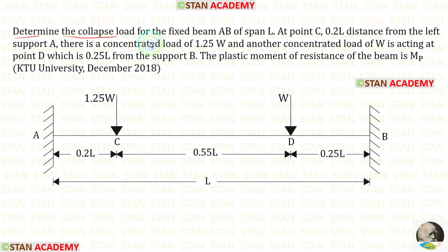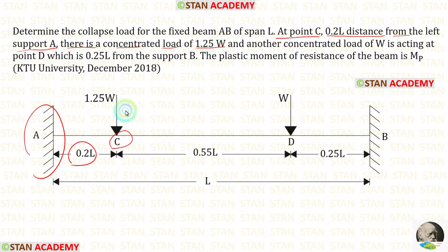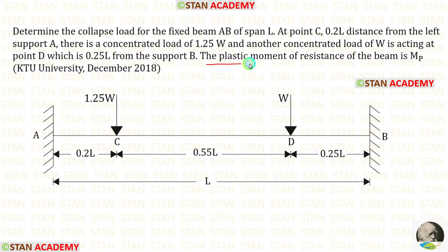Determine the collapse load for the fixed beam AB of span L. At point C, at 0.2L distance from the left support A, there is a concentrated load of 1.25W. Another concentrated load of W is acting at point D, which is 0.25L from the support B. The plastic moment of resistance of the beam is Mp.